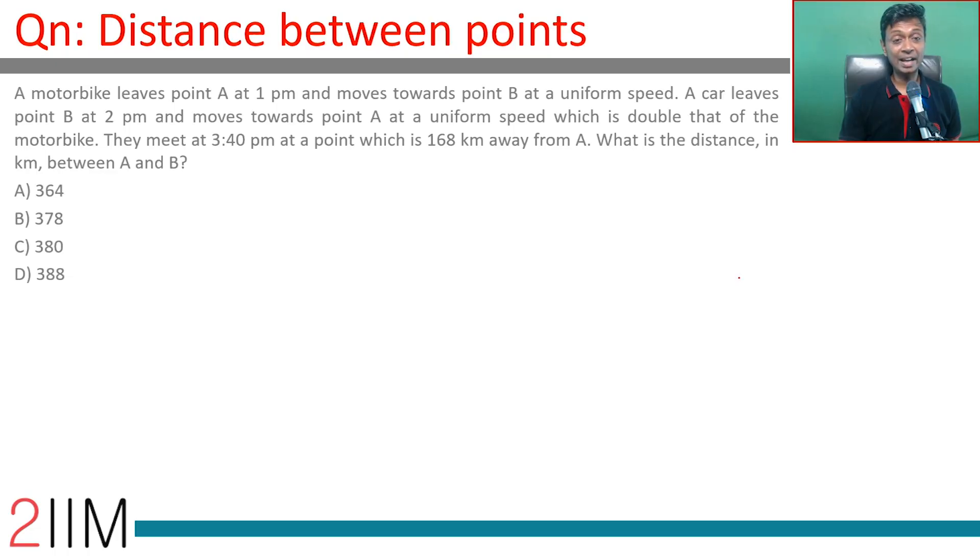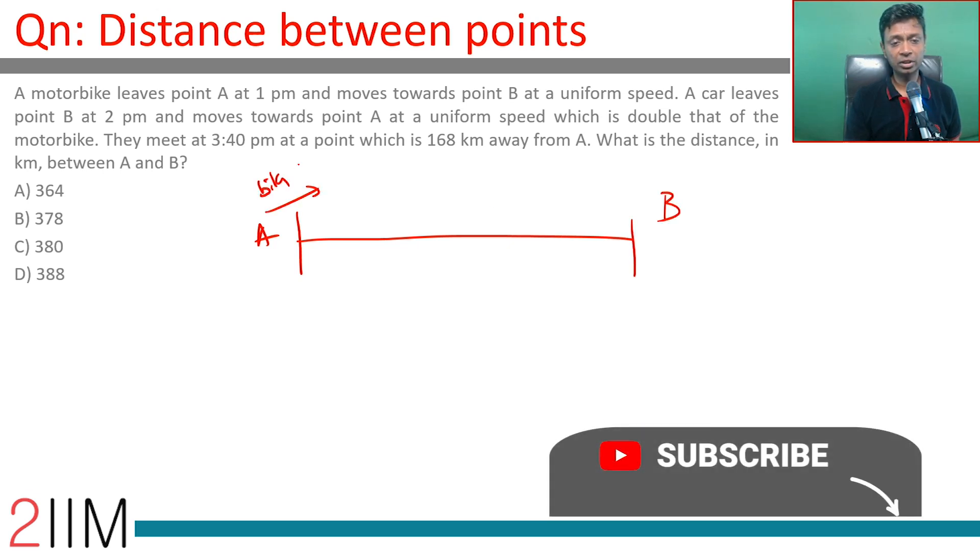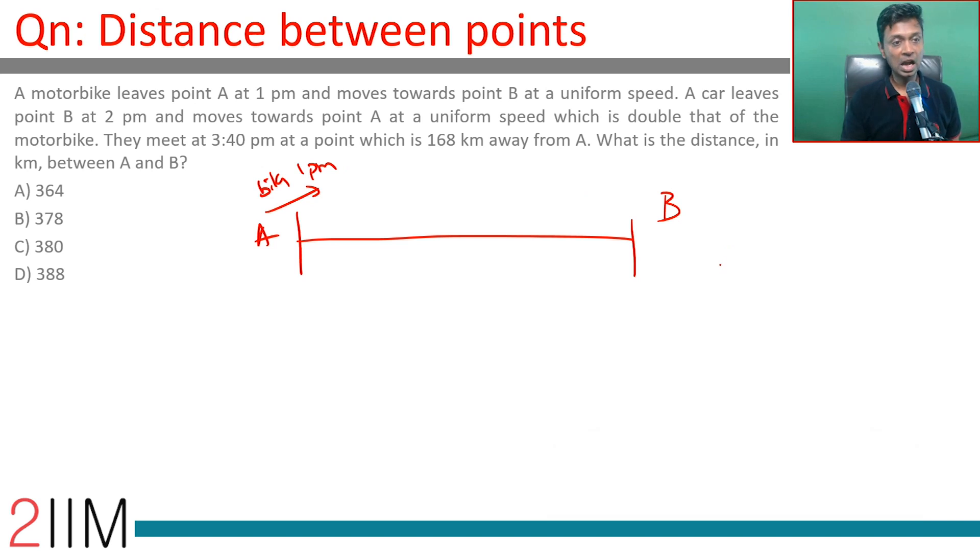A motorbike leaves point A at 1 pm and moves towards point B at uniform speed. A car leaves point B at 2 pm and moves towards point A at uniform speed which is double that of the motorbike. So the motorbike travels at speed x, and the car travels at speed 2x.